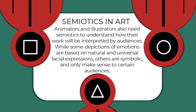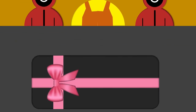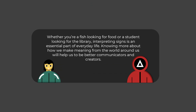Animators and illustrators also need semiotics to understand how their work will be interpreted by audiences. While some depictions of emotions are based on natural and universal facial expressions, others are symbolic and only make sense to certain audiences. For example, this emoji is commonly known as the praying gesture emoji, though some argue it is a high-five emoji. In Japanese culture, the emoji is used to express gratitude and refers to itadakimasu, which is commonly said before eating one's meal. Whether you're a fish looking for food or a student looking for the library, interpreting signs is an essential part of everyday life. Knowing more about how we make meaning from the world around us will help us be better communicators and creators.